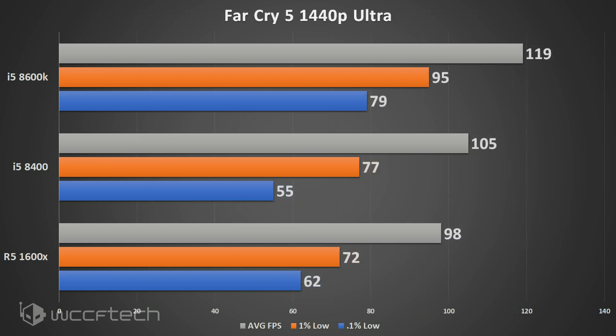Moving over to Far Cry 5, a DX11 game that is decently CPU intensive: the 8400 edges out the 1600X on averages but falls behind on the 0.1% lows, while the 8600K carries the victory by a hefty margin thanks to its higher frequency.